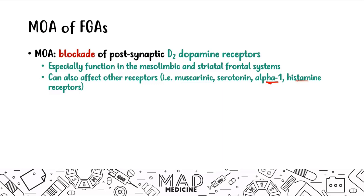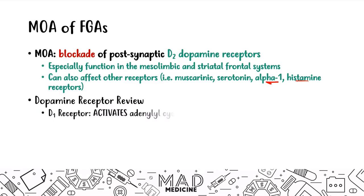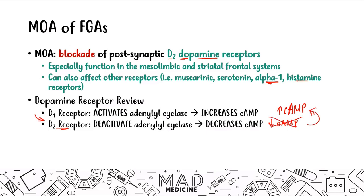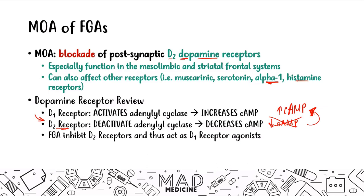Let's quickly review dopamine receptors. We have two main types: the D1 receptor, which activates adenylyl cyclase leading to increased cyclic AMP levels, and the D2 receptor, which deactivates adenylyl cyclase leading to decreased cyclic AMP levels. When you give a first-gen antipsychotic, you are blocking the D2 receptor, so you will not have the normal decrease in cyclic AMP — in fact, you'll have an increase.